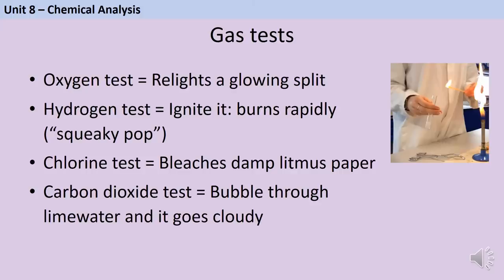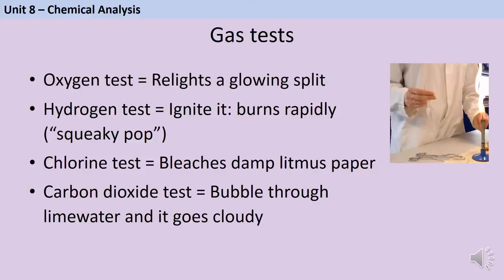There are four gas tests. For oxygen: hold a glowing splint in the gas — if it relights, the gas is oxygen. For hydrogen: hold a lit splint near the gas — it burns with a squeaky pop. For chlorine: use damp litmus paper — the gas bleaches it white. For carbon dioxide: bubble the gas through lime water (calcium hydroxide solution) — it turns cloudy white due to formation of calcium carbonate precipitate.